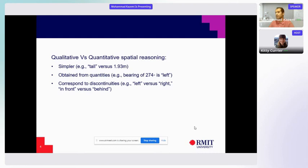The main focus here is why we focus on qualitative spatial reasoning as opposed to quantitative. There are three reasons for doing that. First, it is simpler. Qualitative qualities are simpler than quantities, like tall versus 1.93 meters. Second, they can be obtained from quantities, and finally they correspond to discontinuities. In general, human understanding of space is more connected with qualitative spatial reasoning as opposed to quantitative.